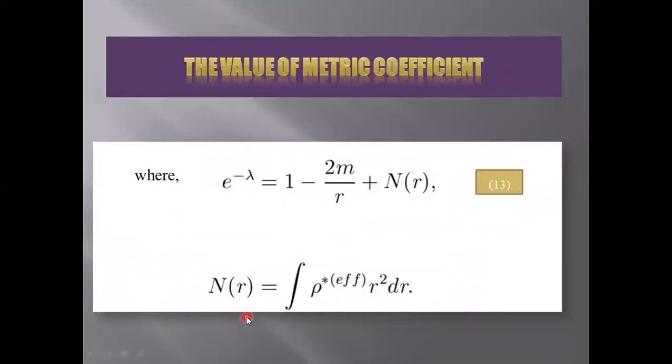Next, we find out the metric coefficient using the Tolman mass and the value of nᵣ is given here.